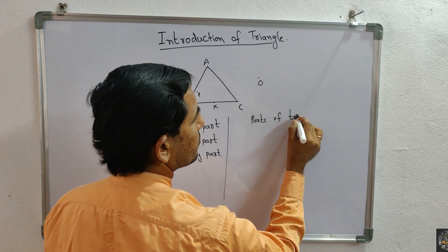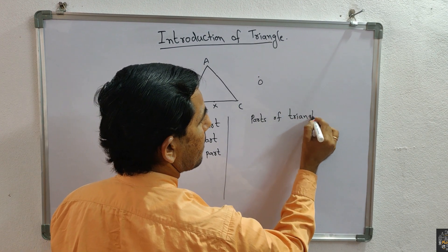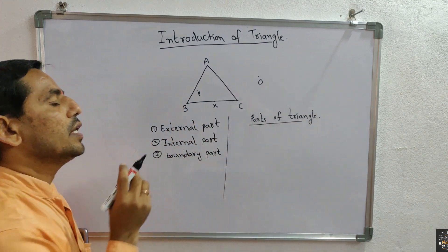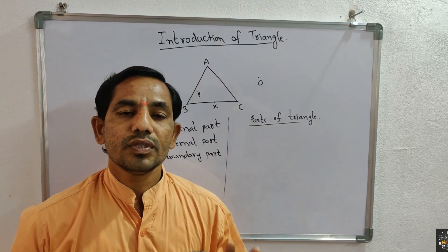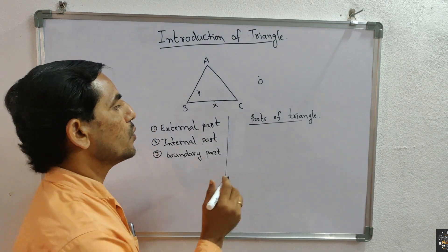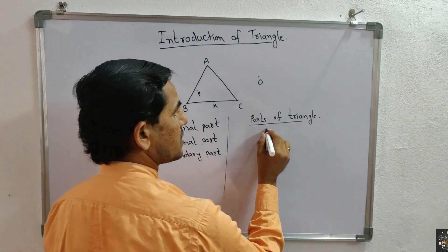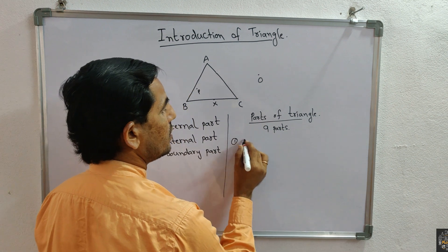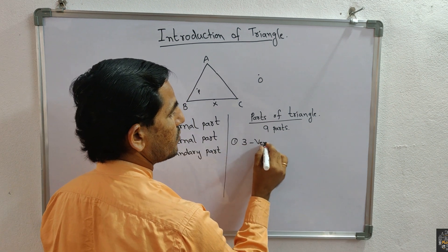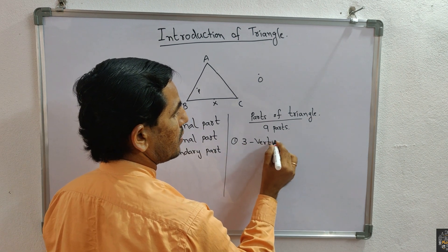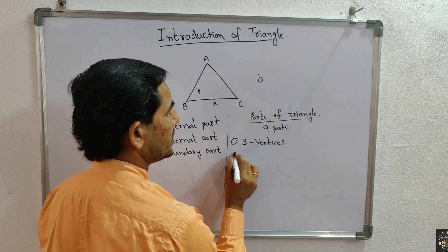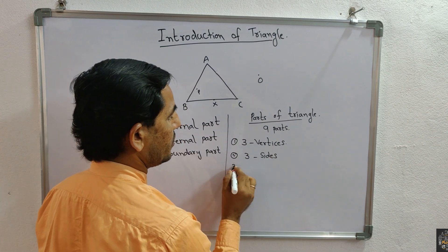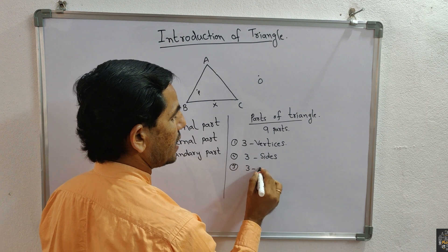Next: parts of triangle. Every triangle has some parts. In total there are nine parts: first, three vertices; second, three sides; and third, three angles.